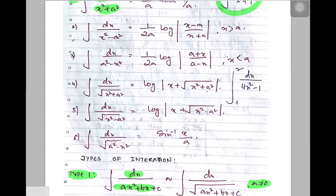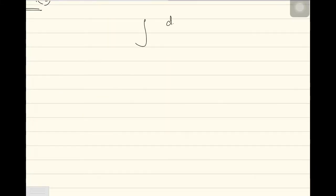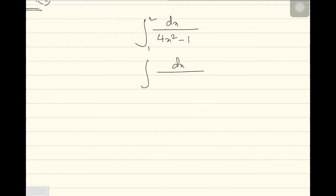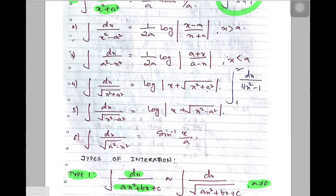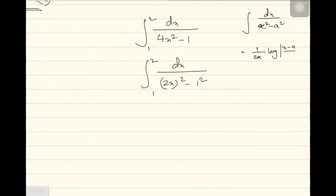The next one is integration from 1 to 2 of dx divided by 4x squared minus 1. I can write 4x squared minus 1 as 2x whole squared minus 1 squared. This integral looks like integration dx by x squared minus a squared, where there is a variable first. The formula for x squared minus a squared is 1 by 2a log modulus of x minus a over x plus a. But this formula works only if there is an x here, not 2x, and here we have 2x.